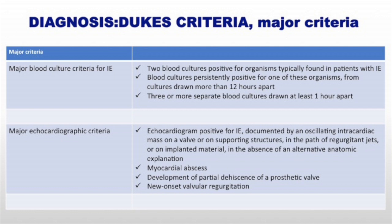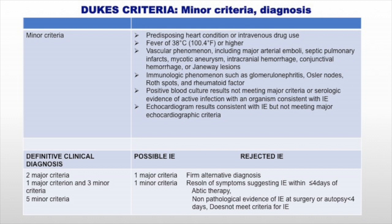To diagnose infective endocarditis, we use the modified Duke's criteria. You have to categorize the patient into three groups: definitive infective endocarditis, possible infective endocarditis, and rejected infective endocarditis. For definitive, the main criteria are pathological as well as clinical criteria. Pathologically, there is microbiological diagnosis and pathological lesion. Clinically, you must have two major criteria — blood cultures and echocardiogram — or one major and three minor criteria, or five minor criteria to get a definitive diagnosis.